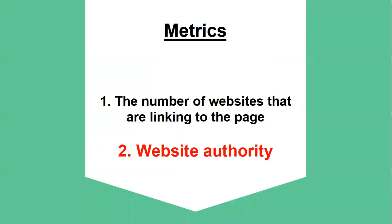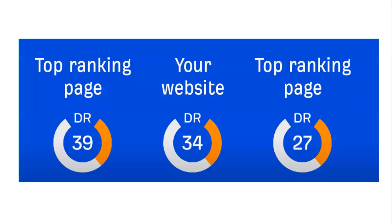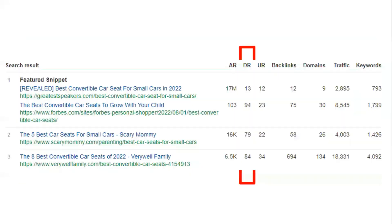The second metric is website authority, which we call domain rating, and it represents the overall strength of a website's backlinking profile. Very generally speaking, you should be going after keywords where your website's domain rating is in a similar ballpark range as the top ranking pages, or at the very least, one of the top ranking pages should be in the same range as your website. For example, if all the websites ranking in the top 10 have high domain ratings and you have a domain rating of, let's say, 10, then you want to consider competing when you are at a similar level.